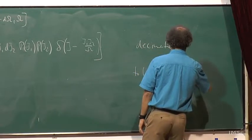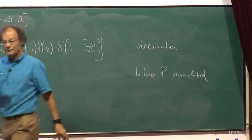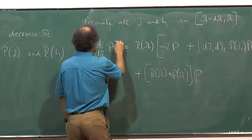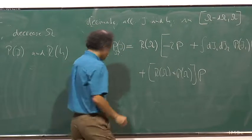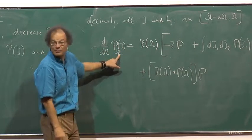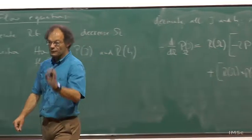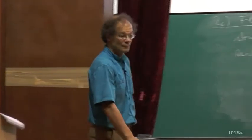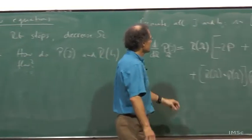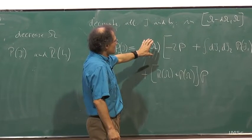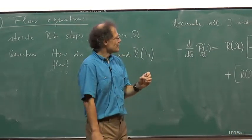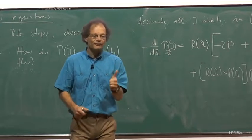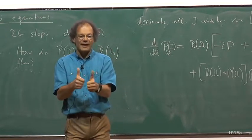We are almost finished but we need to correct the normalization: we are taking out two bonds and putting only one back, so the normalization goes down. The total number of decimation steps is [r(Ω) + p(Ω)]·dΩ, so we add back a term r(Ω) + p(Ω) times P to keep the distribution properly normalized. The first line comes from the decimation and this term keeps P normalized.